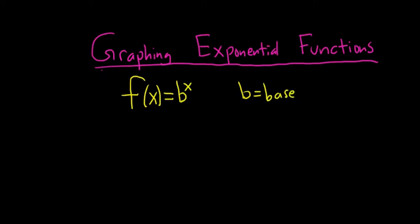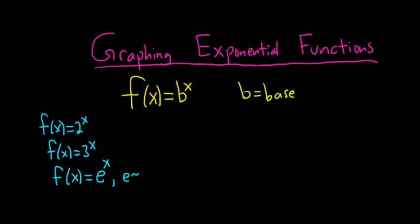Some examples of exponential functions are f(x) = 2^x, where the base is 2, or f(x) = 3^x, where the base is 3. Sometimes we look at a very special exponential function using a base called e. e is approximately 2.7. It's an irrational number, so the digits go on forever with no pattern. All of these are exponential functions - the variable is in the exponent. That's why they're called exponential functions.